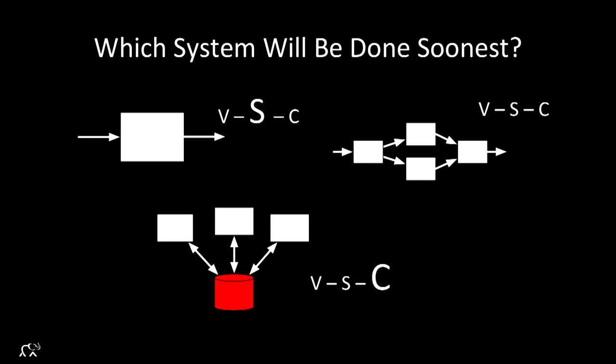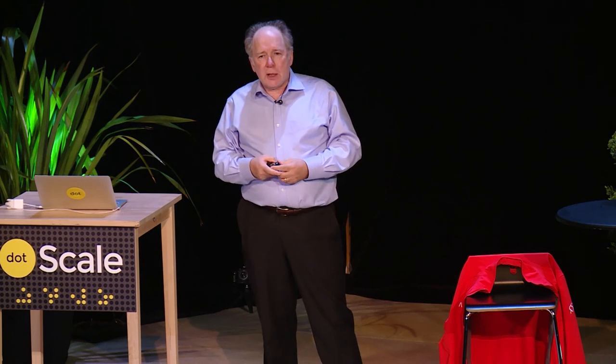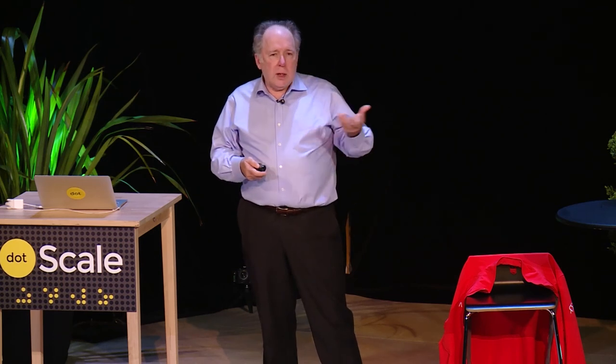Based on these basic considerations, we can see that microservices philosophy with flexible schema and small scale will win. Enterprise service buses, shared schemas, and high communications will not. As systems grow, there's almost no choice but to adopt these things. Messaging systems without global transactions — Kafka-style things — will and already have practically won for exactly these driving economic reasons.